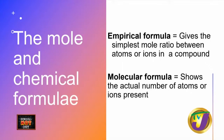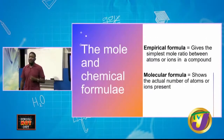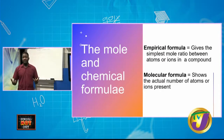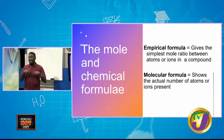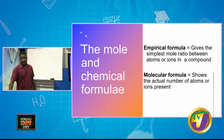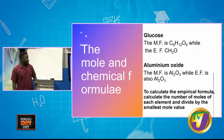Now we move on to the mole and empirical formula. The empirical formula gives the simplest ratio between atoms or ions in a compound. The molecular formula shows the actual number of atoms present. So the empirical formula is a simplified version, while the molecular formula is what is actually present in the molecule or compound.